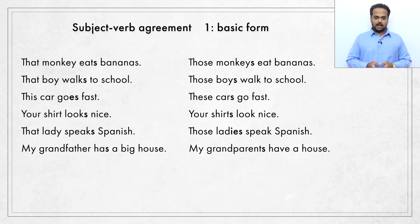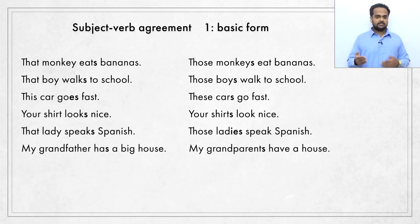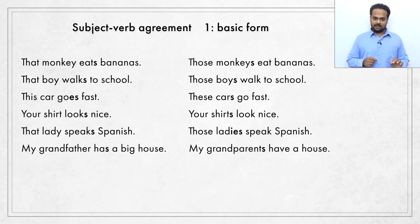So the singular nouns here are monkey, boy, car, shirt, lady, and grandfather. These are all nouns because they are names of people, animals, or objects. The singular verbs all have an S — eats, walks, goes, looks, speaks, and has. When we look at the plurals, this is reversed: the plural nouns all have an S at the end and the plural verbs have no S.